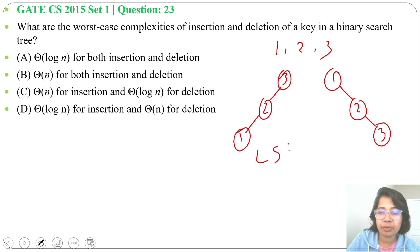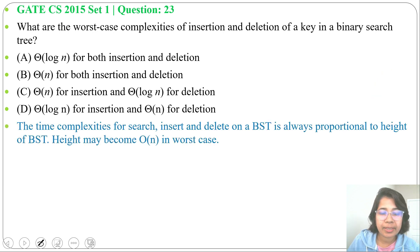This is a left skewed BST and this is a right skewed BST. So the time complexity for search, insertion, deletion on a BST is proportional to its height, and in worst case it can be order of n.